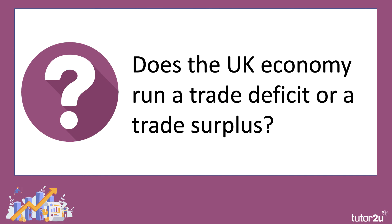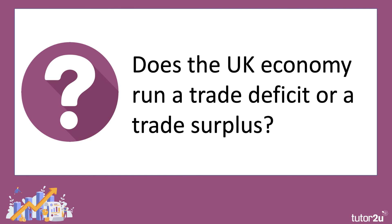The trade balance is sometimes referred to as net exports. What's the situation with regard to the UK economy — do we run a trade deficit or a trade surplus? Here's the data for the UK in annual figures in billions of pounds. The blue line is our exports, which has been going up each year in most years. The orange line is imports.